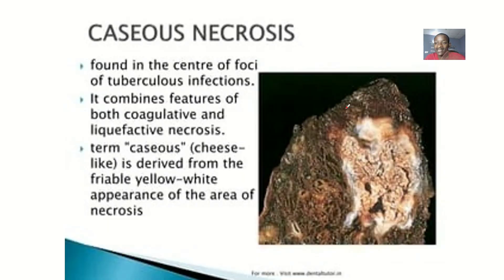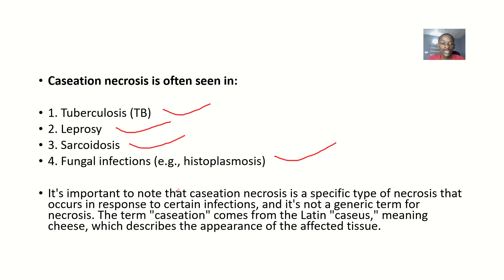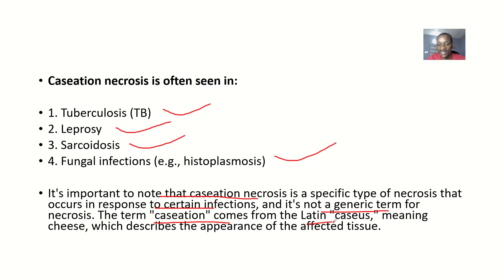Caseous necrosis can be seen in tuberculosis, leprosy, sarcoidosis, and fungal infections like histoplasmosis. It is important to know that caseous necrosis is a specific type of necrosis that occurs in response to certain infections — it is not a generic term for necrosis, as there are other types of necrosis.